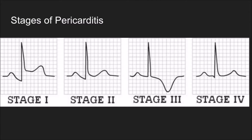Let's take a look at the waveforms and how they manifest in all four stages. Stage one: you've got your ST segment elevation. Stage two: everything's changing back and the T wave will eventually become flat. Stage three: you'll see T wave inversion or something similar to it. Stage four: you've got a normal EKG.